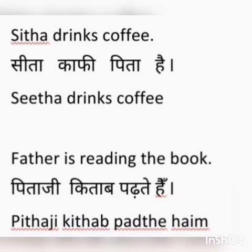Next example: Sita drinks coffee — 'Sita Coffee Peeti Hai'. Here, the verb 'drinks' is giving the answer of 'what'. Drinks what? Coffee. When the verb gives the answer of 'what', we do not use 'Ko' after the object. So here we do not write 'Coffee Ko'; we simply write 'Coffee'.